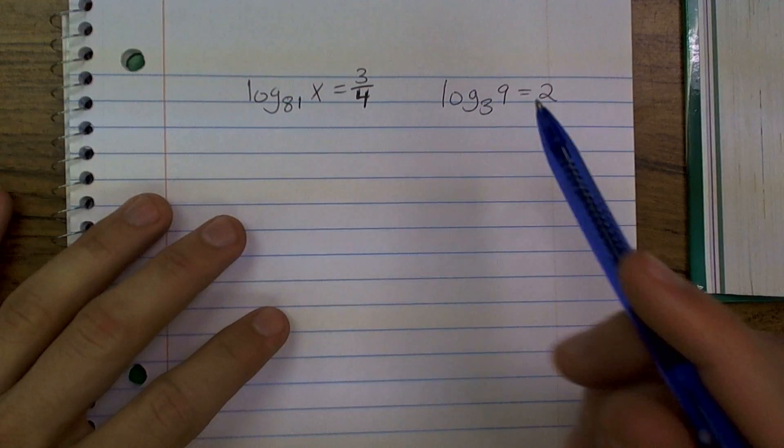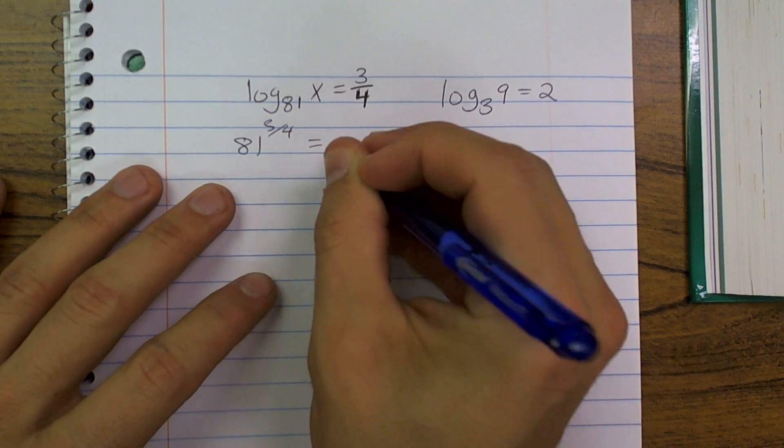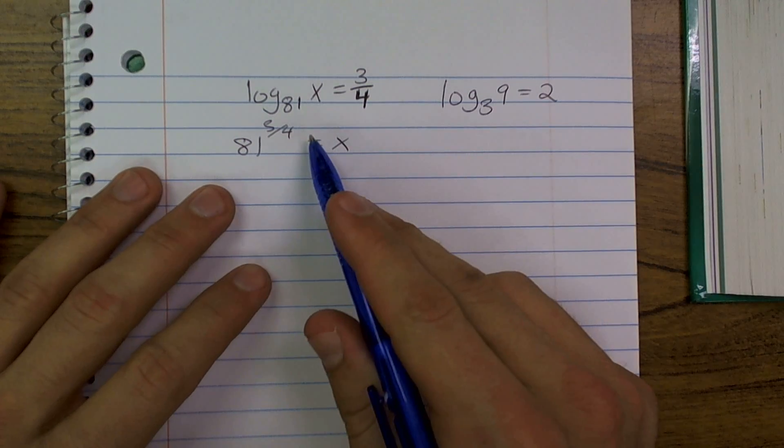For this problem, I'm going to do the exact same thing. I'm going to rewrite 81 to the 3 fourths equals x. Now, what do we do from here? How do you solve 81 to the 3 fourths?